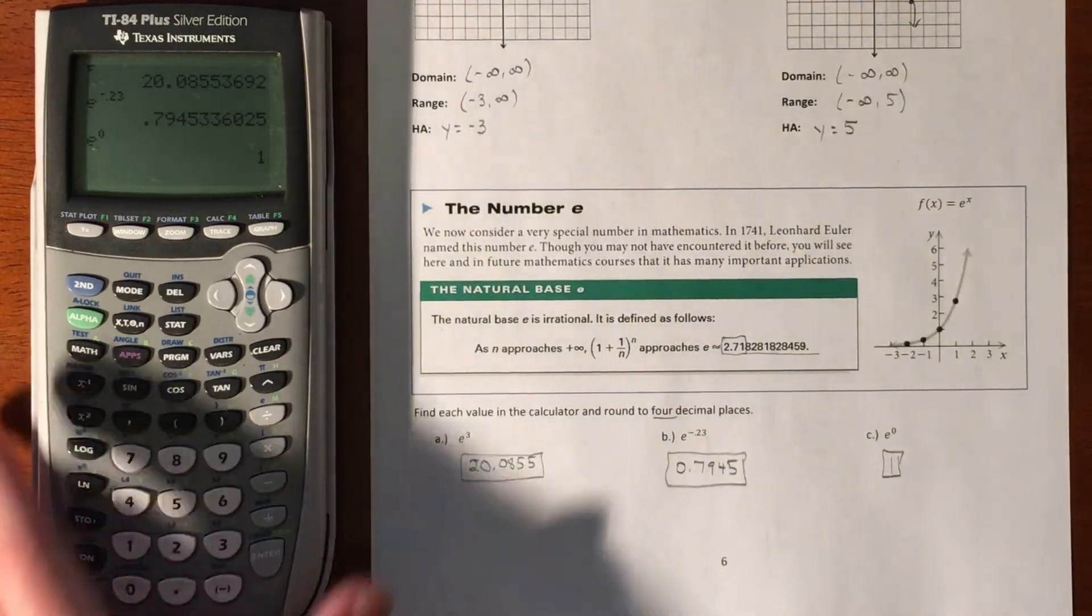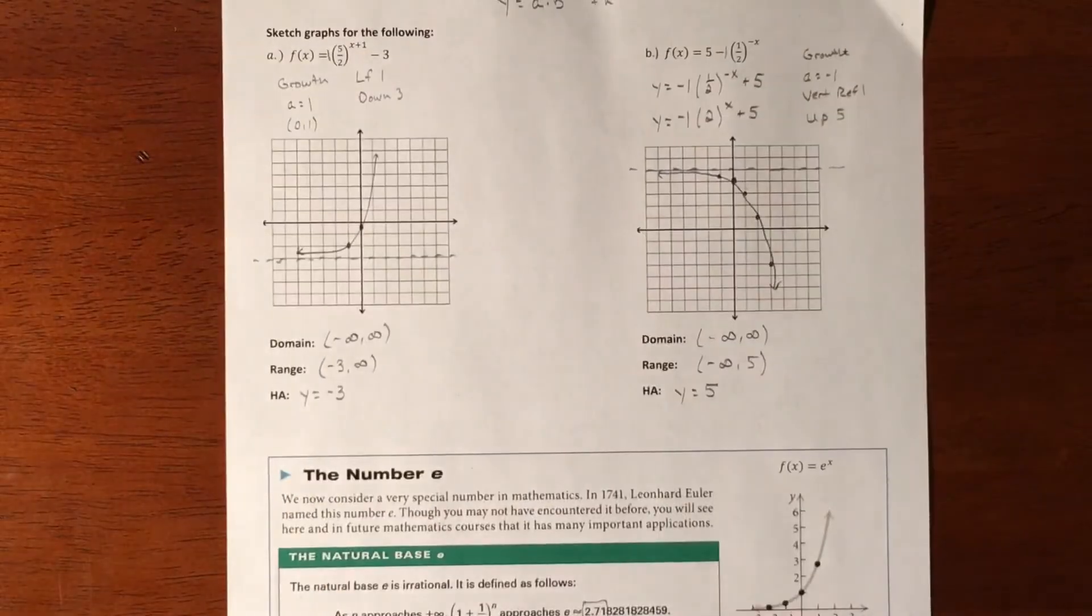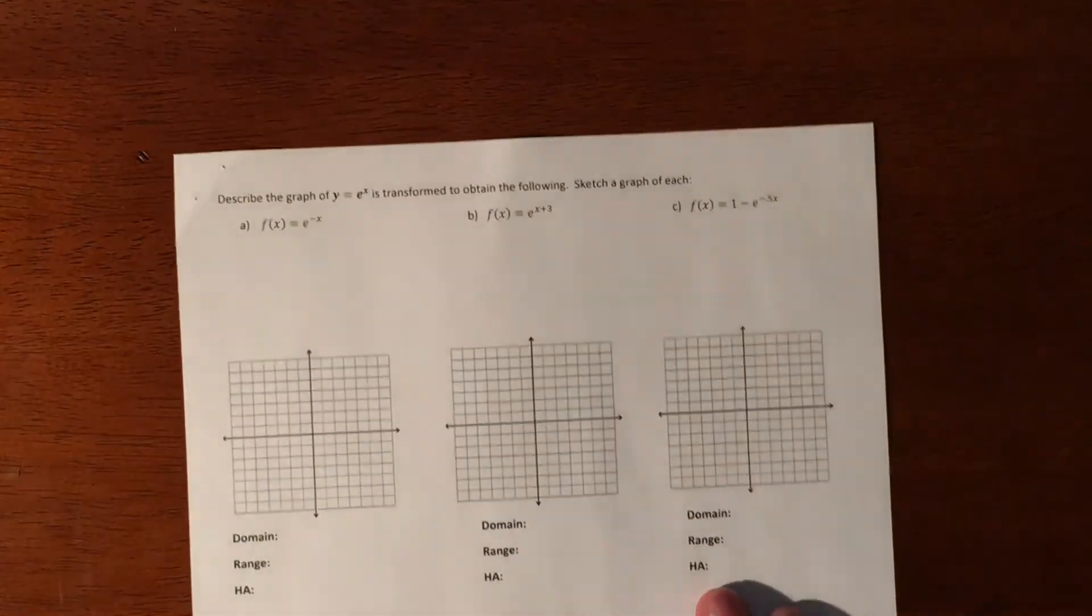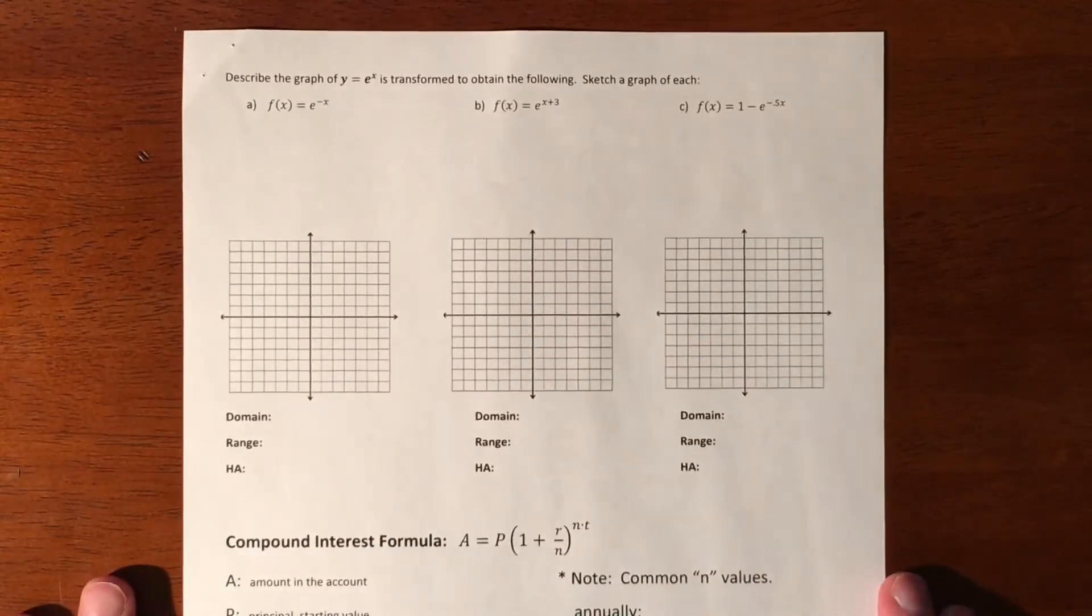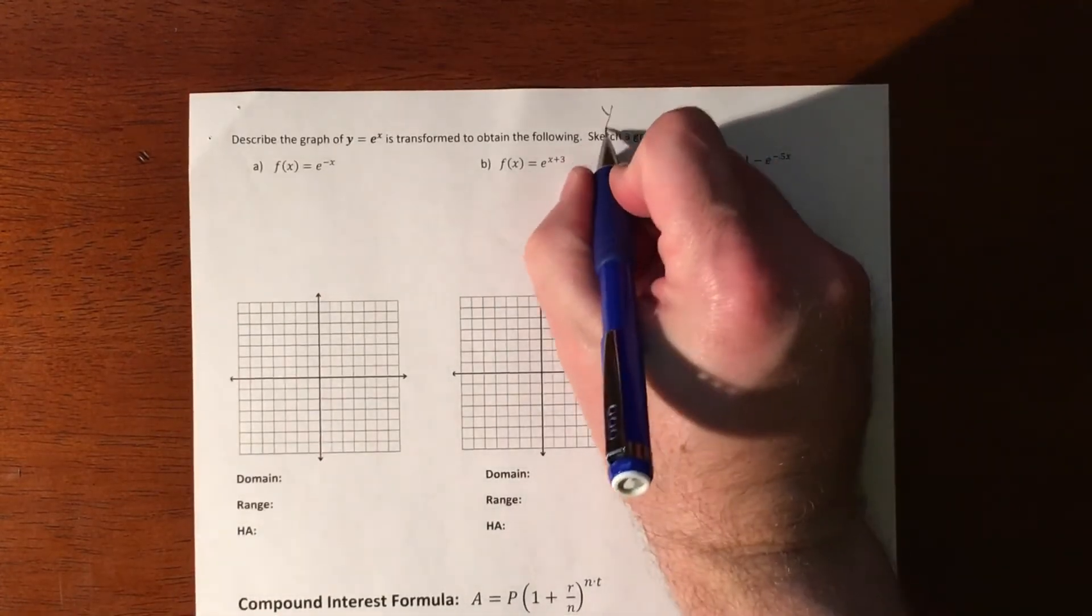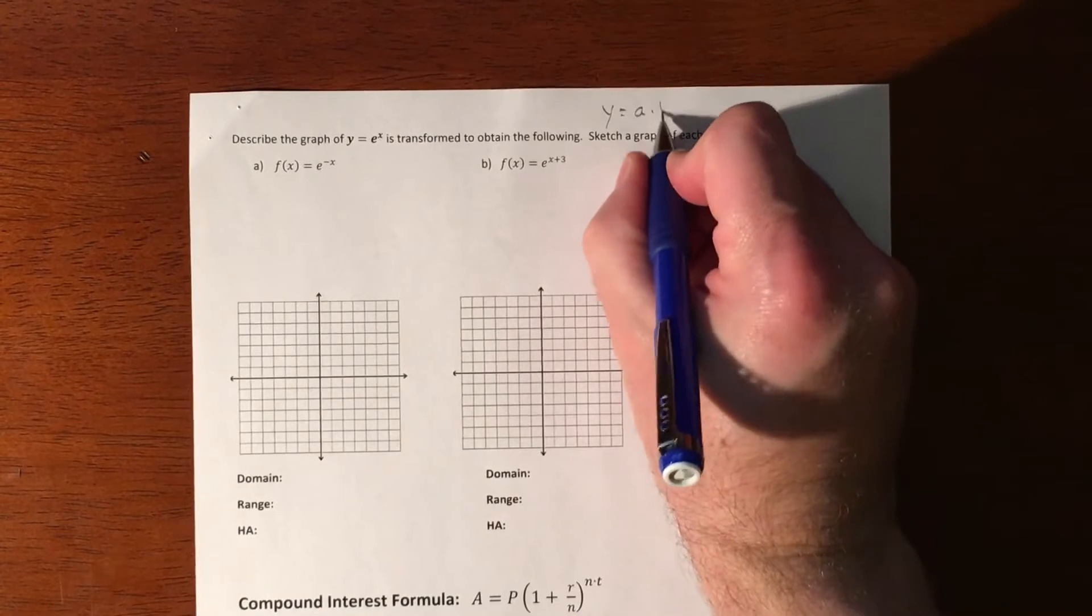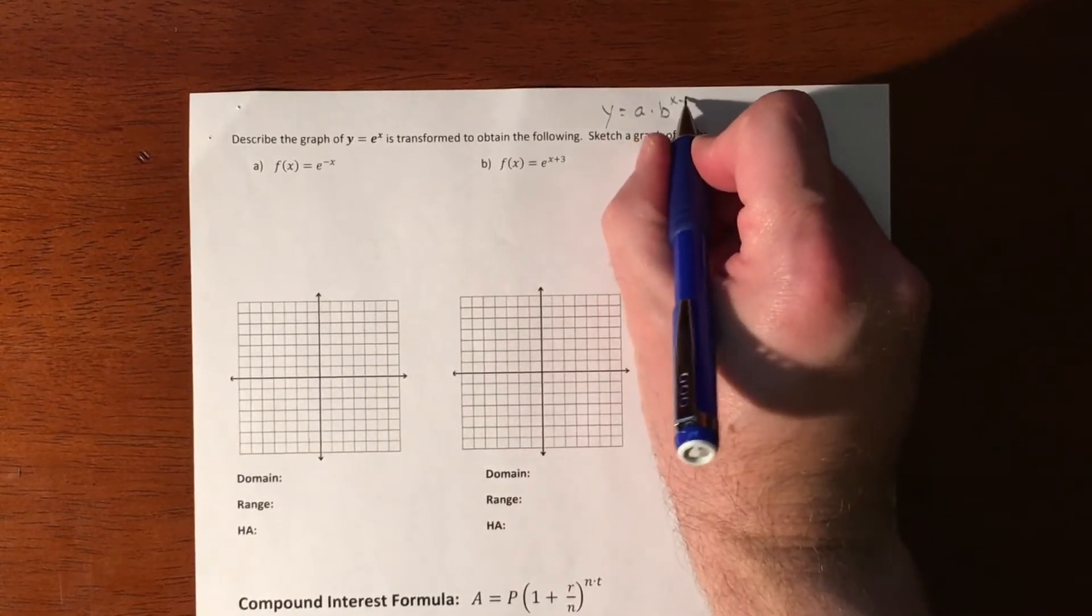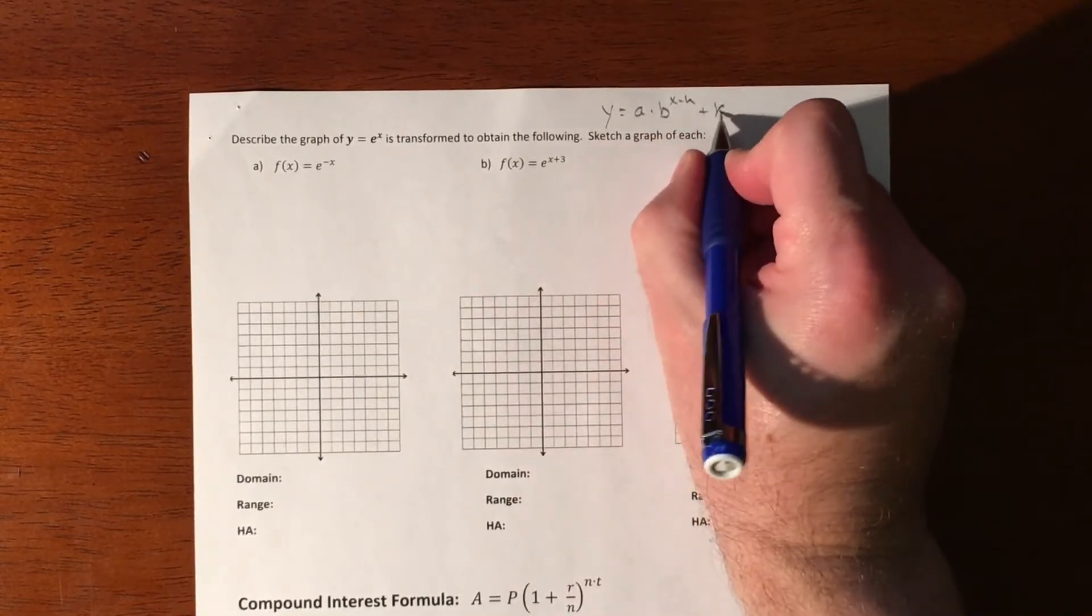So that is just a really quick, brief introduction. So now we're going to also graph E. So if we're going to graph E, it has the same kind of a feel as our normal A to the B minus that.